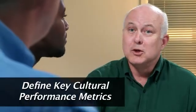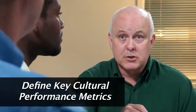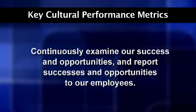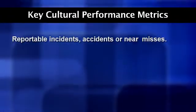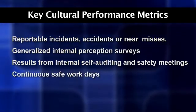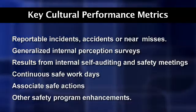Collecting vital safety-related data from incidents and accidents and using that information to improve environmental conditions is key to enhancing a culture that accepts inadvertent human errors as learning opportunities. Once you start the circle of safety and it's transparent to everyone, quality escalates and risk drops significantly. A key management principle: if you want performance to improve, measure it. We need to define key cultural performance metrics to continuously examine and report our successes and opportunities. The Safety Committee can play a big part in reporting internal occurrences, analysis of events, and results of self-audits. Measurable items include reportable incidents, accidents, near misses, internal perception surveys, self-audit results, safety meetings, continuous safe work days, associate safe actions, and other safety program enhancements.